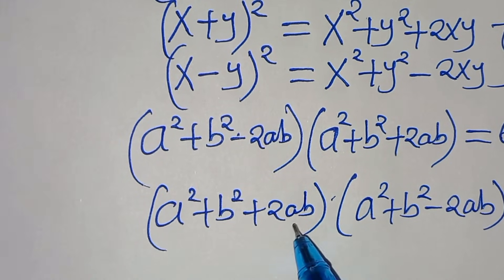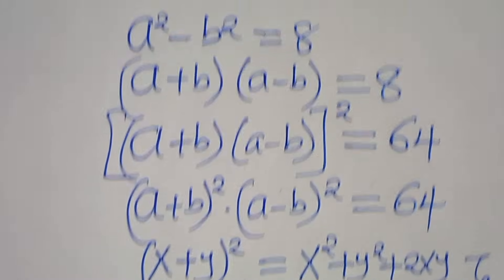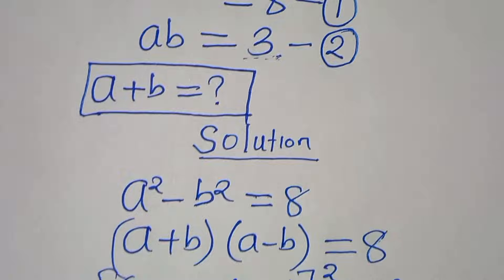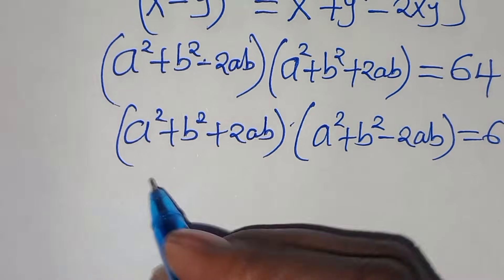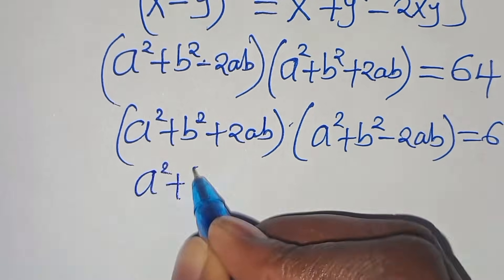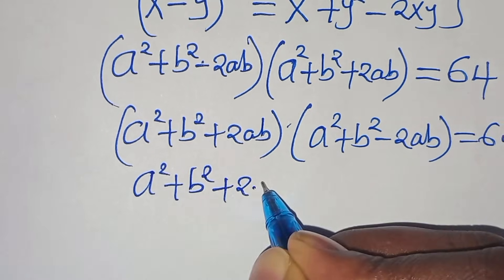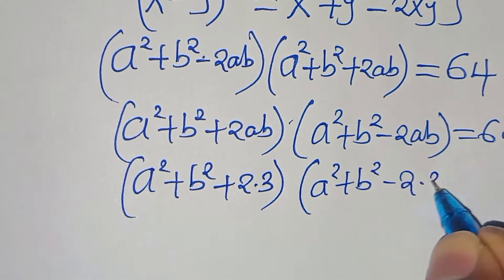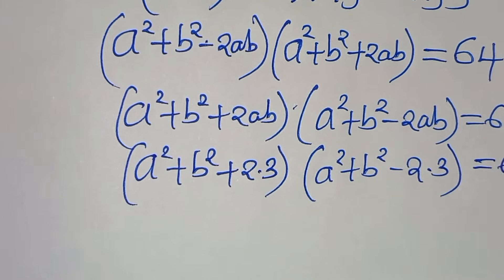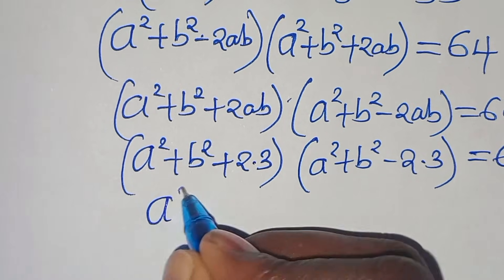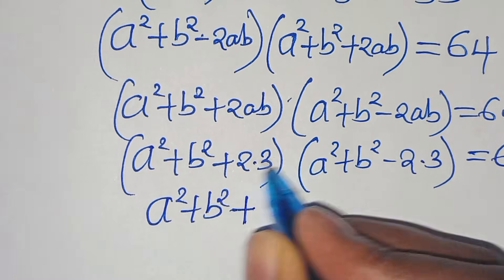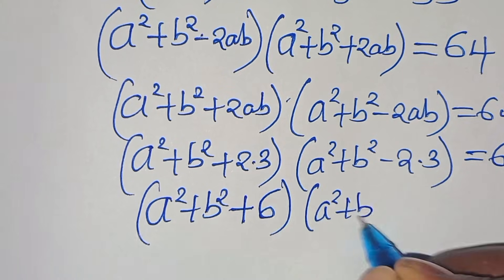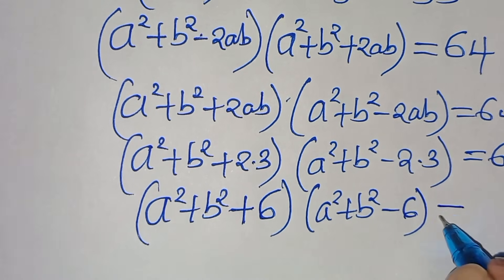From equation 2, a times b equals 3, so let's substitute. We have (a squared plus b squared plus 2 times 3) multiplied by (a squared plus b squared minus 2 times 3) equals 64. This simplifies to (a squared plus b squared plus 6) multiplied by (a squared plus b squared minus 6) equals 64.